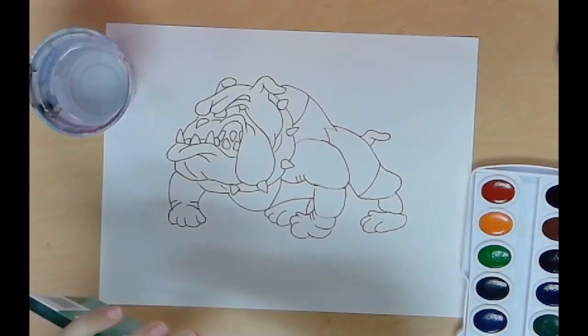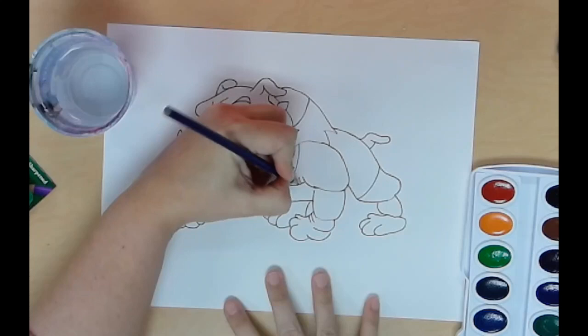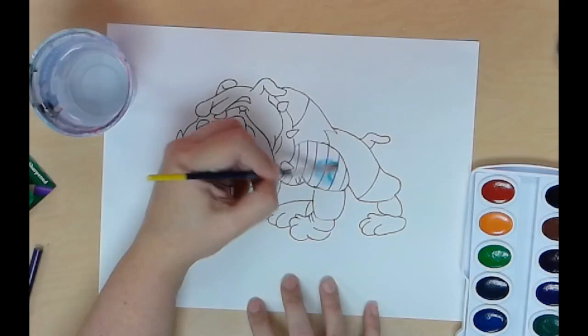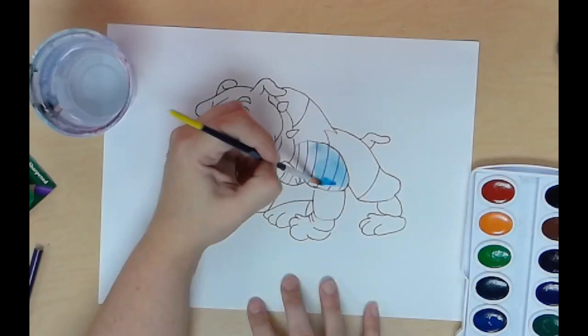You could draw some designs on your bulldog with colored pencil, and then go back over and paint. You don't have to do that, but if you want to, you can.